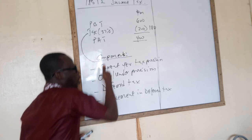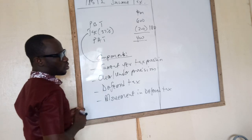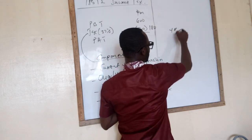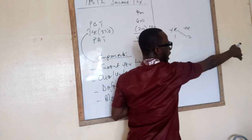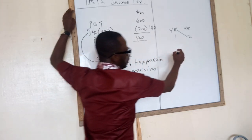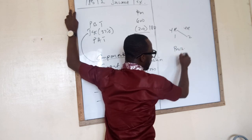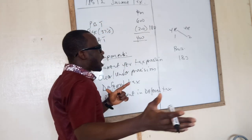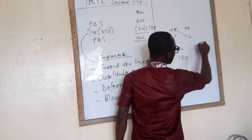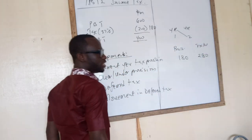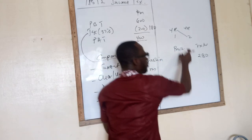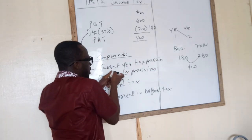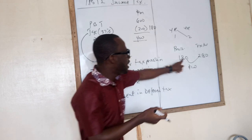There is also what we call over or under provision of tax. Why? Because companies pay tax one year in arrears — the tax of year one will be paid in year two. So if you provide that you will pay a tax of $180, and the tax authority comes and determines you are supposed to pay $280, the difference of $100 will be treated as an under provision of tax.